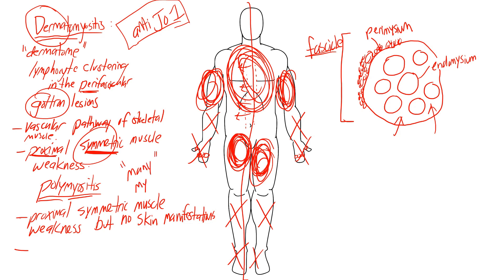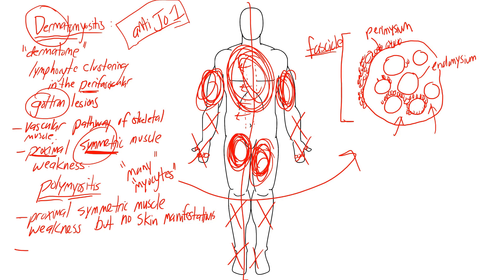Going back to the muscle diagram: each muscle fiber is surrounded by the endomysium, and these are clustered together into a fascicle surrounded by the perimysium. In dermatomyositis, lymphocytes cluster around the entire fascicle unit. In polymyositis, 'poly' for many myocytes tells you the lymphocyte clustering is going to be around the many individual myocytes — so it will be endomysial lymphocyte clustering, in between the myocytes, not around the outside of the whole fascicle.